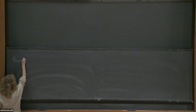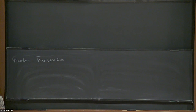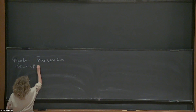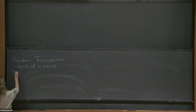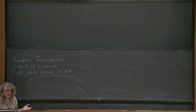The first model is random transpositions. In all these shuffling schemes we have a deck of n distinct cards. In the random transposition model, the right hand picks a card uniformly at random, the left hand picks a card uniformly at random, and you swap them. If you choose the same card, you fix that case. So you pick cards uniformly at random with repetition and swap them.